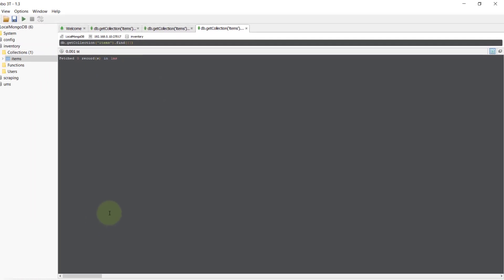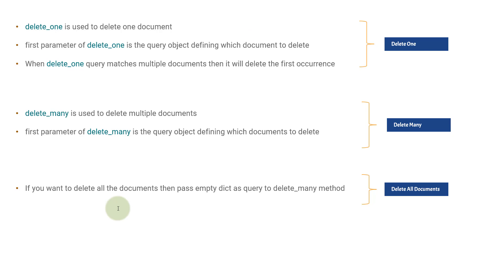This was how you can delete documents using delete_one or delete_many. If you have a bulk delete, go for delete_many. If you have a single delete, go with delete_one. That was all for this video. Hope you liked the video and my channel. Please subscribe and share these videos with other people. Thank you.